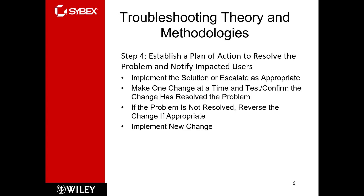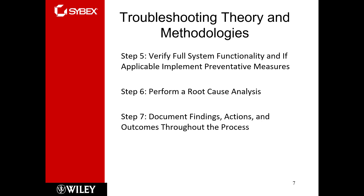If the problem is not resolved, use change management — go back, revert, try again. Implement the new change and check if the desired result is present. Step five is verify functionality: verify the system is functioning, verify the user's issue is resolved, and verify everything is back in working order. What you assume the issue is and what the user thinks it is can be two different things.